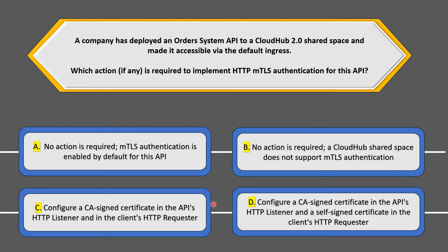Options C and D are not applicable because they relate to code-level implementation, whereas the question is about enabling mutual TLS in CloudHub. So we can discard options C and D, which leaves us with option A and option B. To validate the correct answer, we will check the MuleSoft documentation.